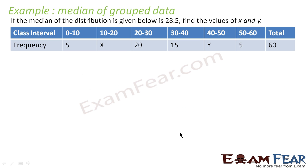Please focus on this question. The question says the median of the distribution is 28.5 and we have to find the value of x plus y. The median is 28.5, and if you see, 28.5 falls in this class interval, so this is my median class — that is very clear just by observing the data.